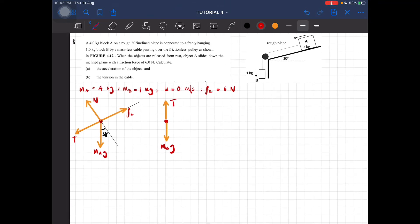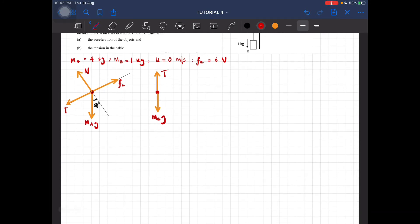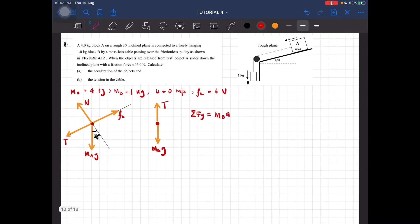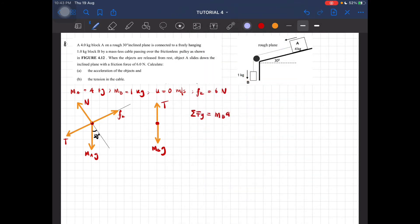For block B, the total force at y equals m_B a. The acceleration is going down, so forces that follow the direction of acceleration will be positive. So m_B g minus T equals m_B a, therefore T equals m_B g minus m_B a. This is equation 1.